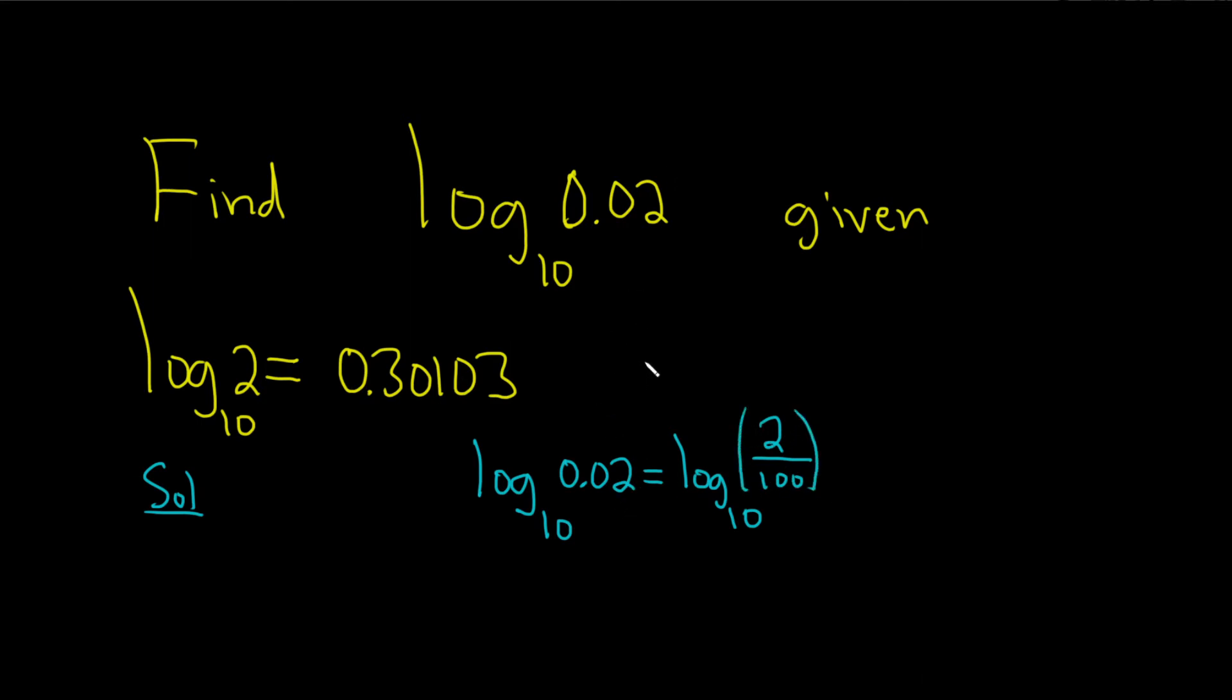And now we can use something called the quotient rule. The quotient rule says if you have log base b of x over y, what you do is you just subtract. This is log base b of x minus log base b of y.